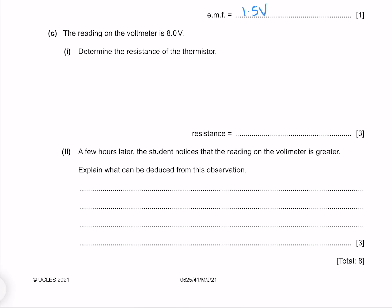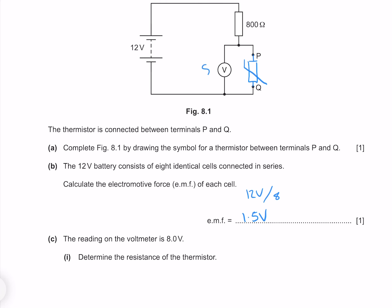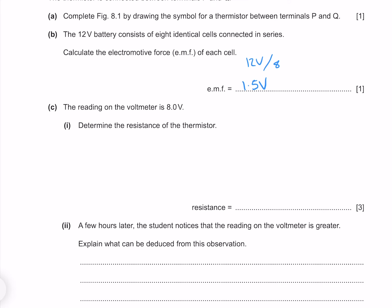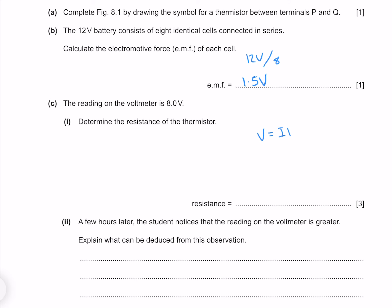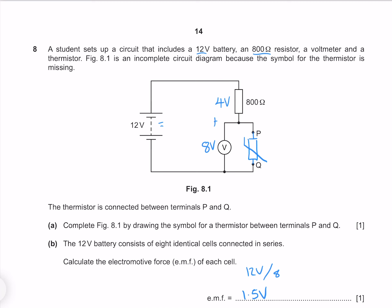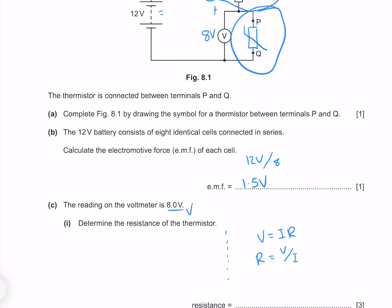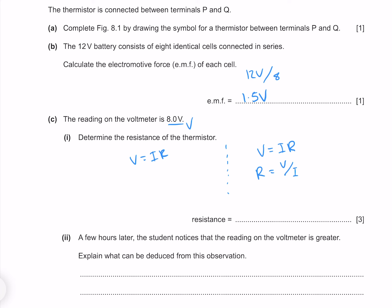The reading on the voltmeter is 8 volts. Determine the resistance of the thermistor. If we have 8 volts across here, then we must have 4 volts across the resistor, because these two voltages must add to 12. Because this is a series circuit, the current through every component is the same. Using Ohm's law on the 800 ohm resistor: current equals 4 volts divided by 800 ohms, giving 0.005 amps. Applying Ohm's law to the thermistor: resistance equals 8 volts divided by 0.005 amps, giving me 1600 ohms.